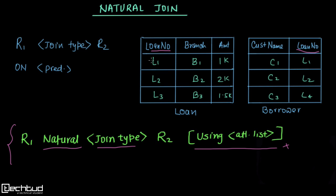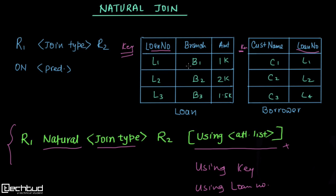However, let's say both tables also have a common attribute called key, in addition to loan number. So we have two attributes which are common in both tables. In that case, if we want to perform a natural join using a particular attribute, we specify USING key or USING loan_number. If we don't specify anything, it will simply perform the join on the basis of all common attributes.